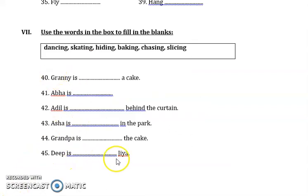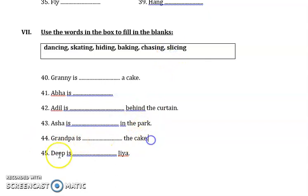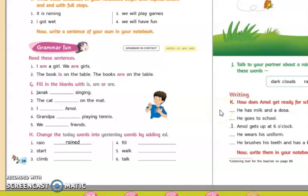Next, you have a few sentences. You can use the -ing words to fill in the blanks. Granny is dash a cake — Granny is baking a cake. Abba is dancing. Adil is hiding behind the curtain. Asha is skating in the park. Grandpa is slicing the cake. Deep is chasing Jia. Complete the given exercise and you can turn to page number 28 in your English Reader.